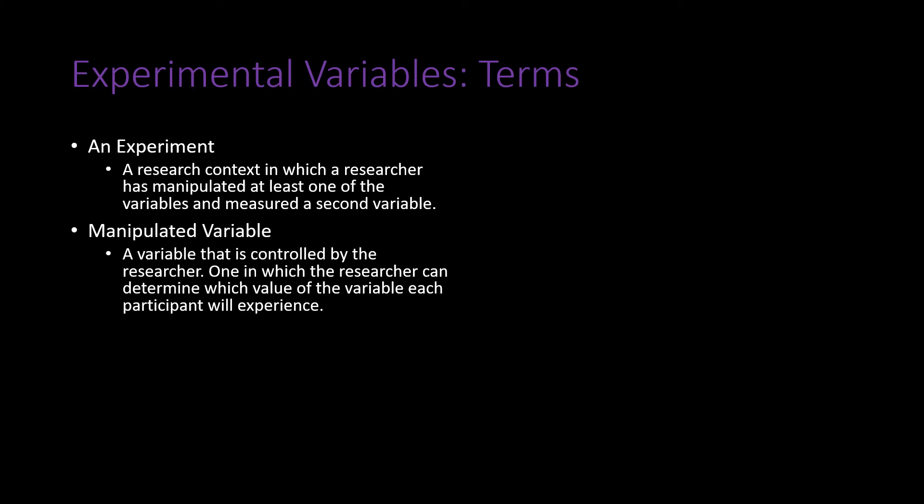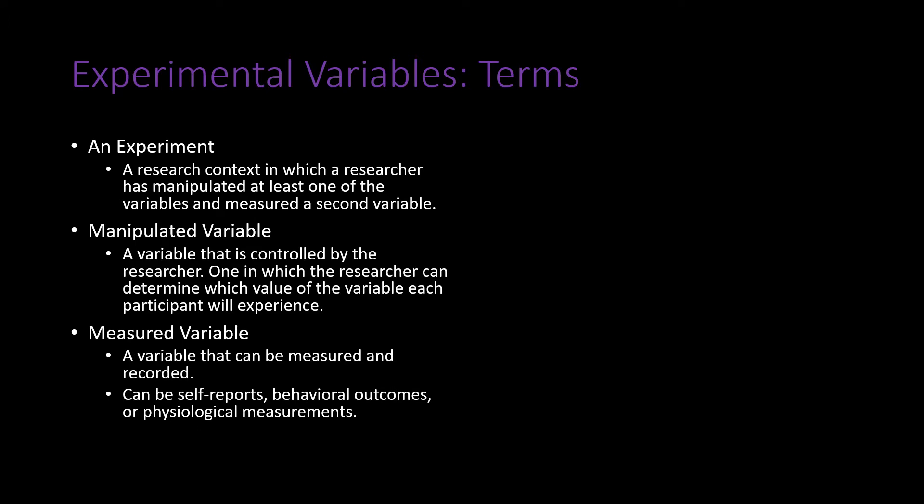A manipulated variable is the variable that the researcher controls — in the note-taking experiment, this would be note-taking style. It is whatever variable the researcher has identified multiple levels of, and the researcher is able to define which participant goes into which group. A measured variable is simply a variable that can be measured or recorded.